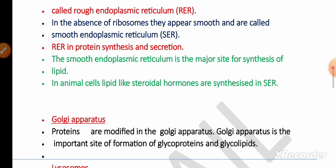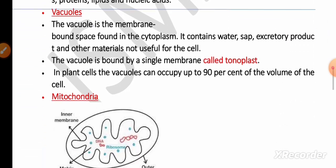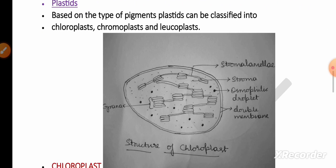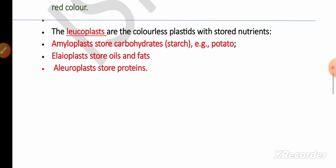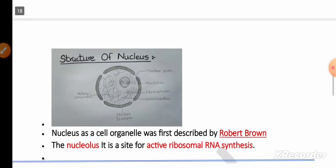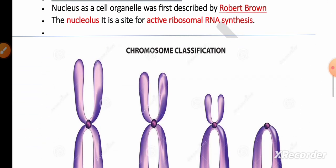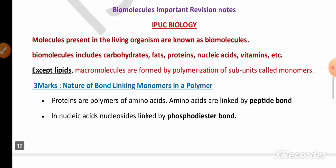Remember the roles of organelles — endoplasmic reticulum, Golgi apparatus, lysosome, vacuoles, mitochondria (diagram and explanation). For plastids, especially the chloroplast diagram, remember the classification of leucoplasts and their functions. Also remember the structure of RNA, the structure of the nucleus, and the classification of chromosomes based on the position of the centromere.